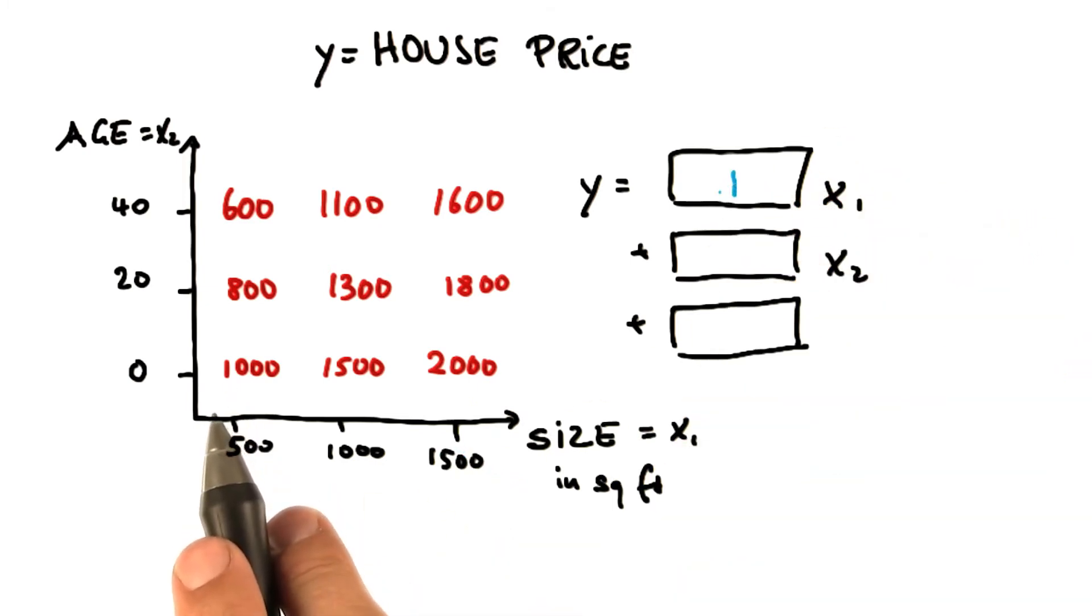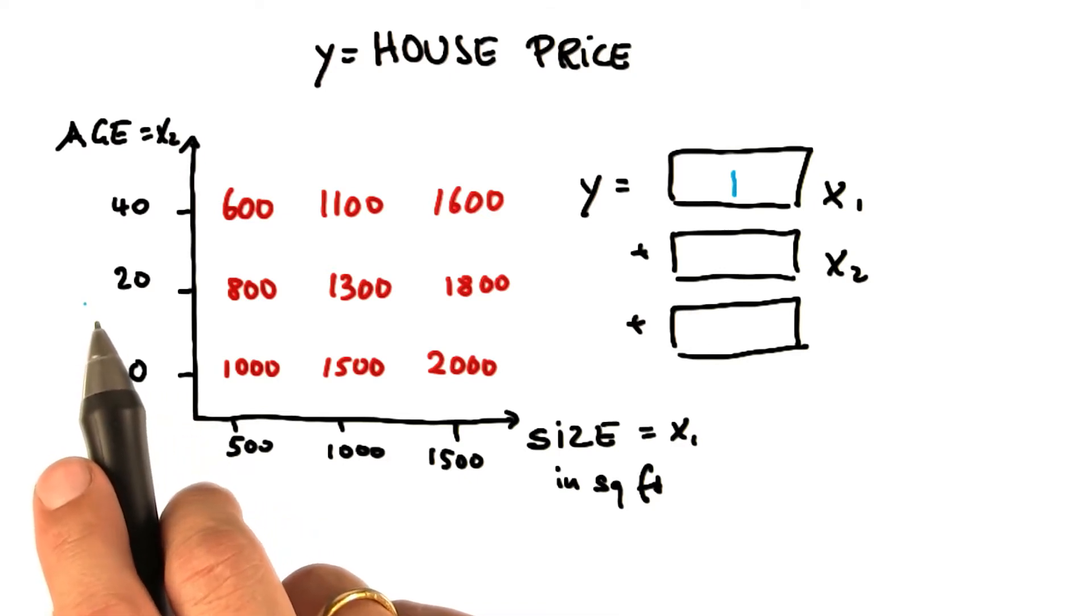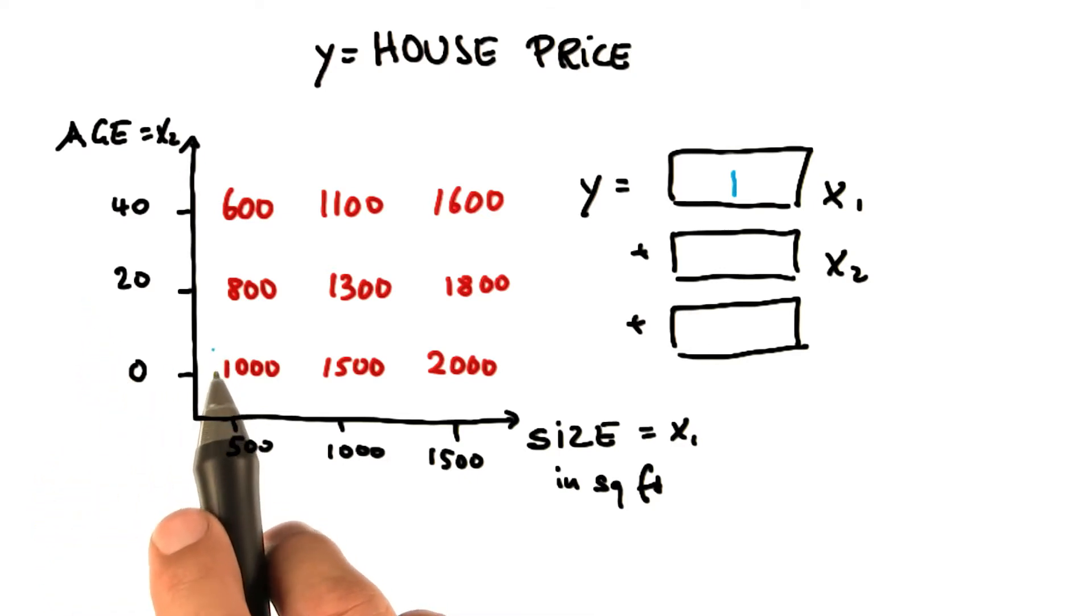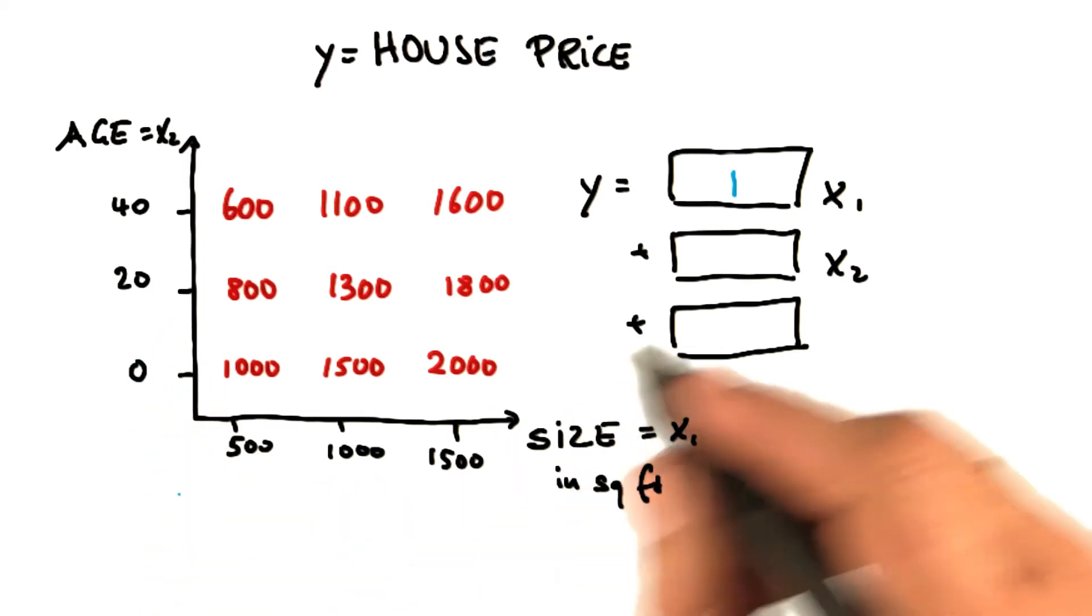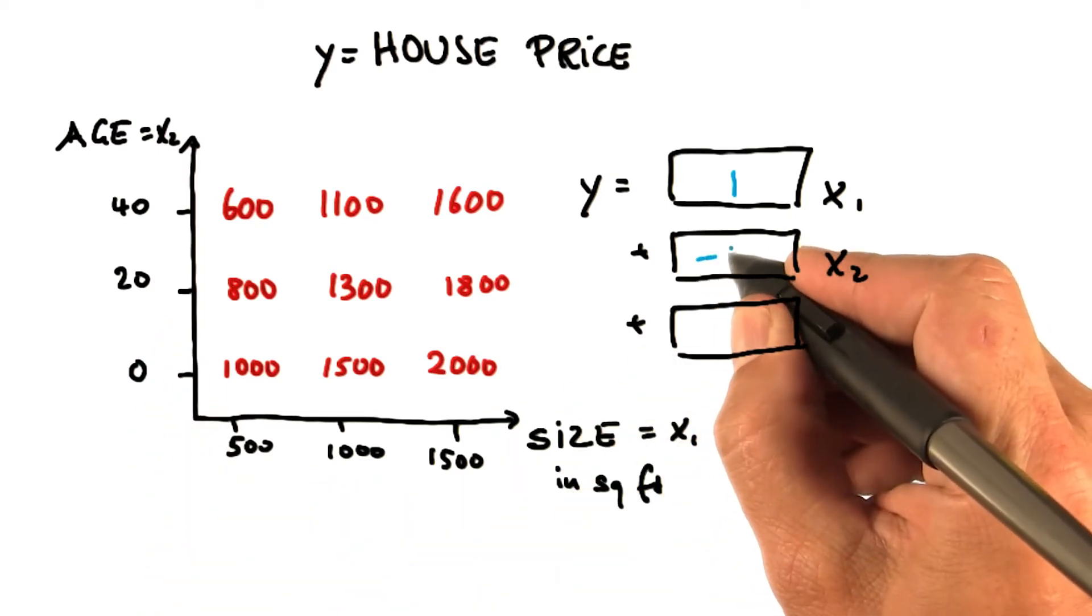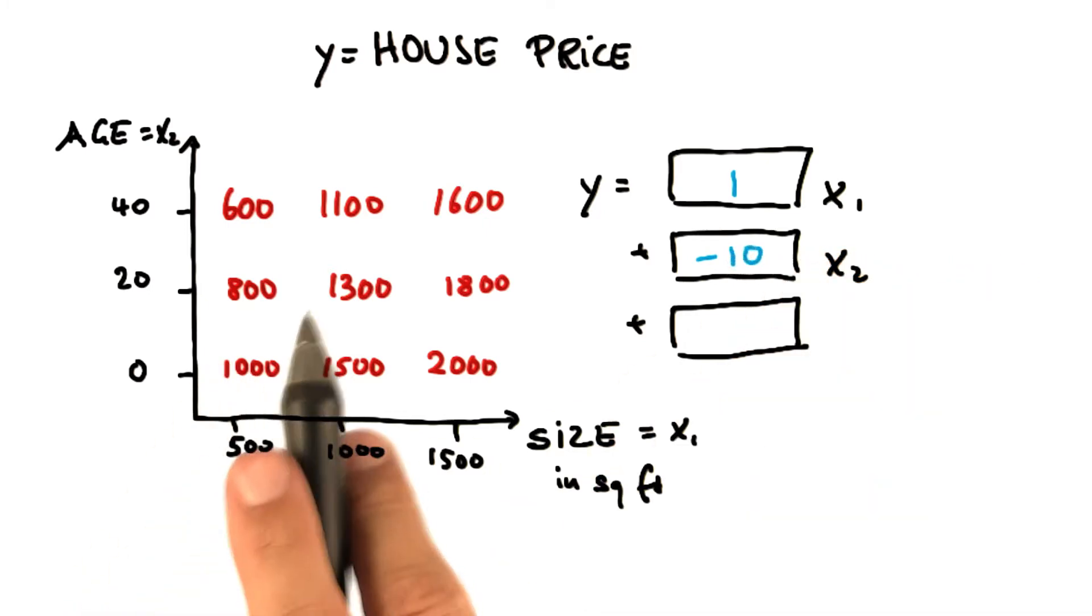To go vertical, we find that as we increase the age by 20 years, our price drops by minus 200. So that means the ratio of those, minus 200 divided by 20, is minus 10. It's really important to get the mindset right because older houses are cheaper in the spreadsheet.